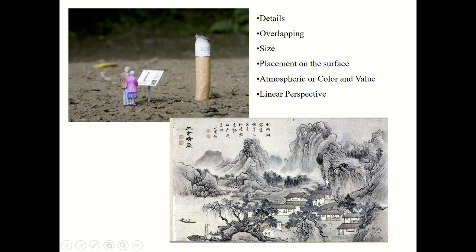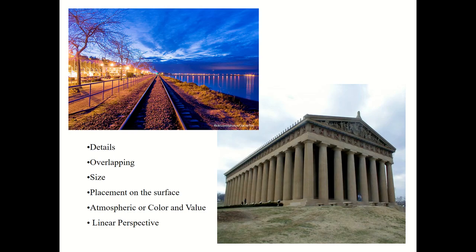Identify these — details, overlapping, size, placement, atmospheric, or linear perspective. The answer is linear perspective. See the railroad tracks go off into the distance into a single point. And this one also goes into a two point perspective with two vanishing points — the vanishing points here are outside the frame of the photograph. So you don't have to stay within the paper to create a two point perspective.